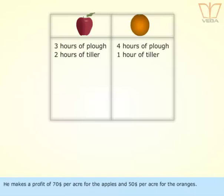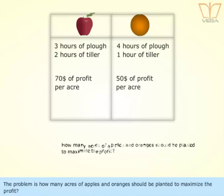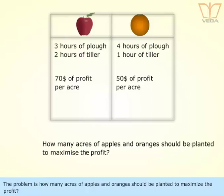He makes a profit of $70 per acre for the apples and $50 per acre for the oranges. The problem is how many acres of apples and oranges should be planted to maximize the profit.